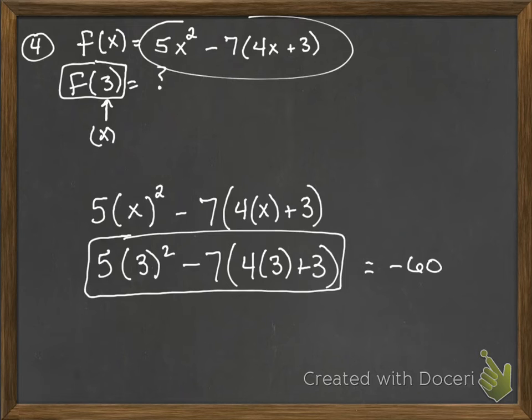Okay, but let's look at how we would use this using order of operations. So I know that this becomes 5 times 3 squared is 9 minus 7 times, that's 12. 12 plus 3 is 15.